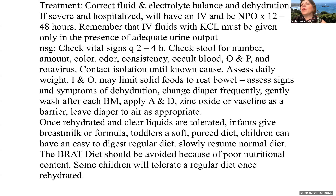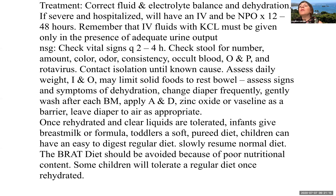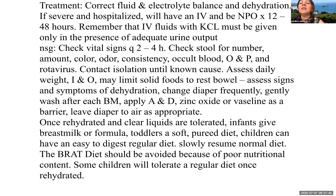Treatment: very important to correct fluid and electrolyte imbalance as well as dehydration. If a child has severe dehydration and is hospitalized, they will typically have an IV and may be placed NPO for 12 to 48 hours to allow the bowel to rest. IV fluids with potassium chloride must be given only in the presence of adequate urine output. Monitor vital signs frequently. Check stool for number, amount, color, odor, consistency, occult blood, ova and parasites, and rotavirus. Diarrhea is counted as output because it is typically liquid. Contact isolation should occur for all cases of diarrhea until the cause is known.